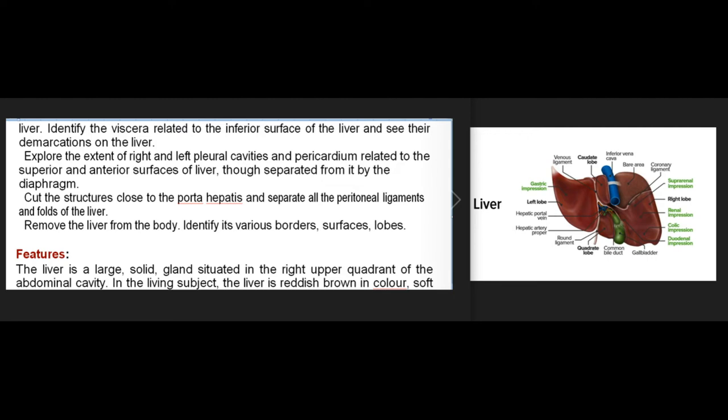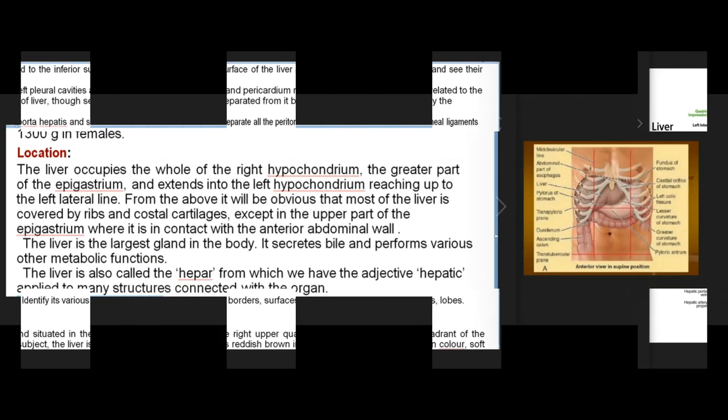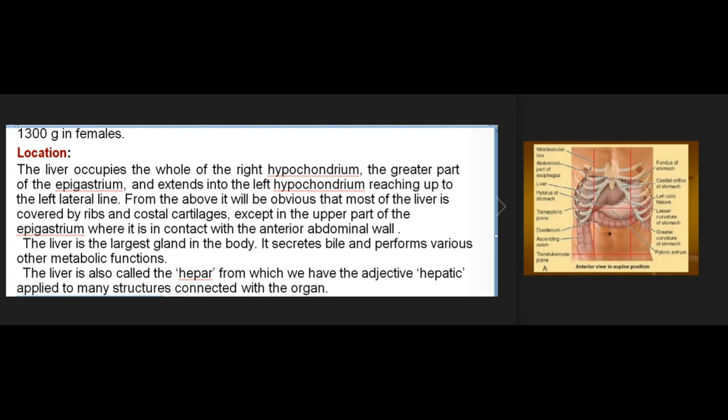Features: the liver is a large solid gland. In the living subject it is reddish-brown in color, soft in consistency, and very friable. It weighs about 1,600 g in males and about 1,300 g in females. Location: the liver occupies the whole of the right hypochondrium, the greater part of the epigastrium, and extends into the left hypochondrium, reaching up to the left lateral line.